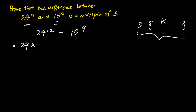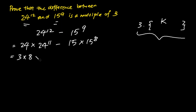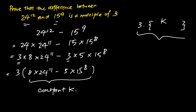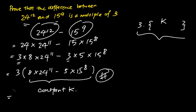We know that 24 to the power of 12 is the same as 24 times 24 to the power of 11, and 15 to the power of 9 is the same as 15 to the power of 8 times 15. We can further express 24 as 3 times 8 times 24 to the power of 11, and 15 times 15 to the power of 8 as 3 times 5 times 15 to the power of 8. From here we can factorize 3 out of the whole equation, giving a constant k, thus proving the difference is a multiple of 3.